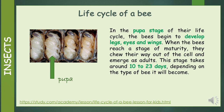In the pupa stage of their life cycle, the bees begin to develop legs, eyes and wings. When the bees reach a stage of maturity, they chew their way out of the cell and emerge as adults. This stage takes around 10 to 23 days, depending on the type of bee it will become.